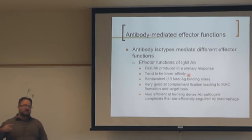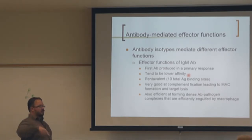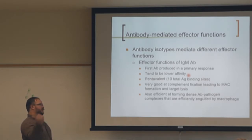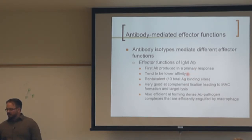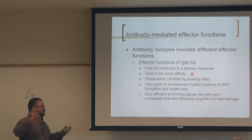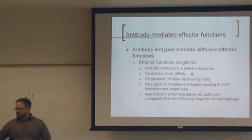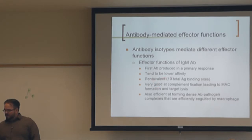Although IgM is low affinity, it compensates through avidity because the pentamer provides more binding sites. IgM is pentavalent with ten total antigenic binding sites, making it very effective at complement fixation and MAC formation. The higher avidity likely evolved to compensate for lower affinity.